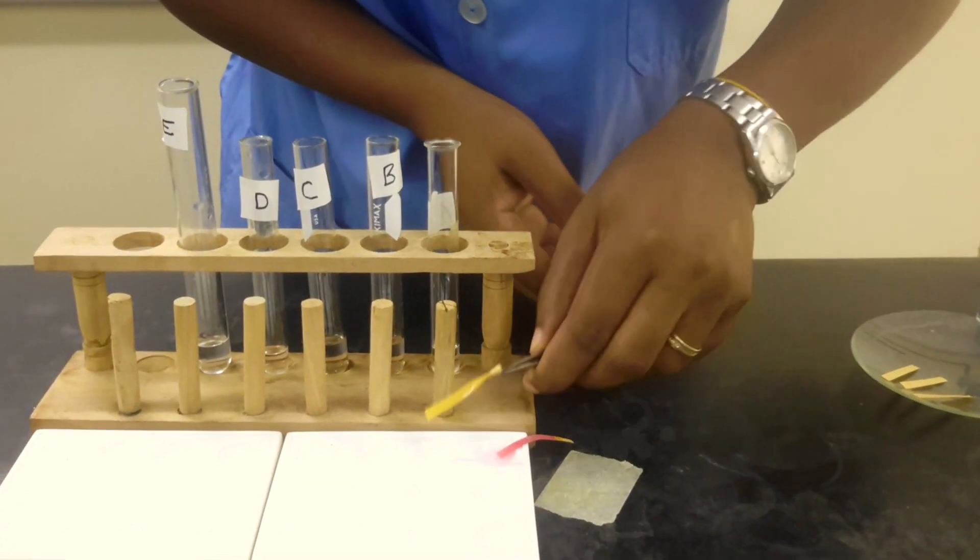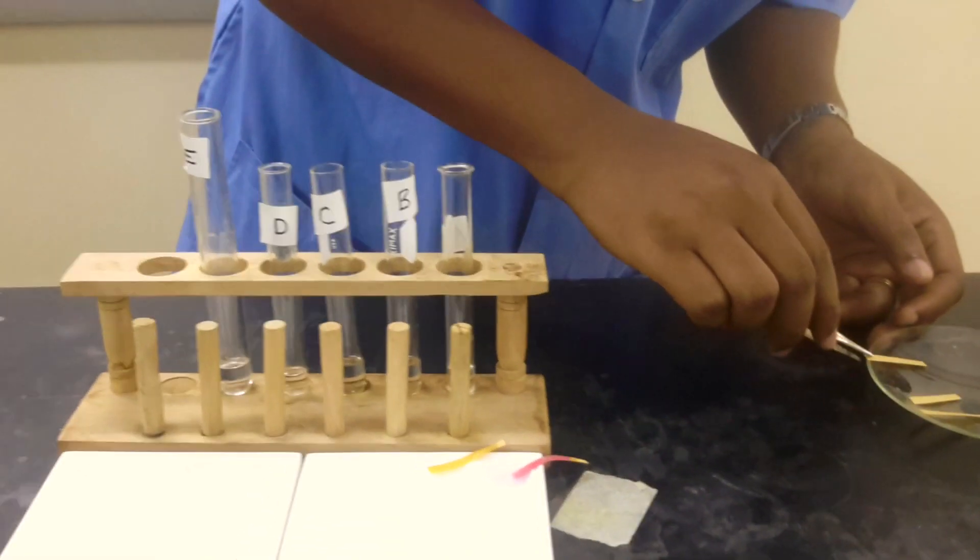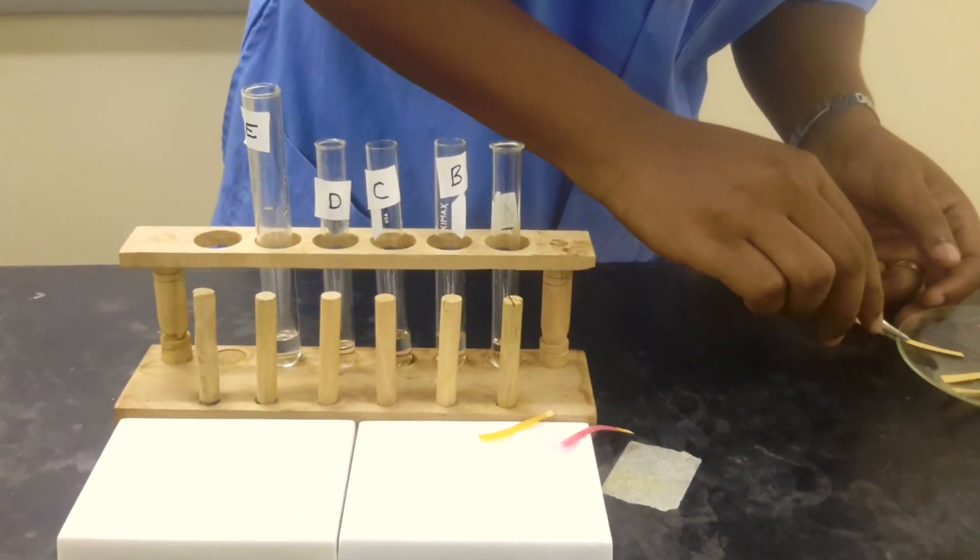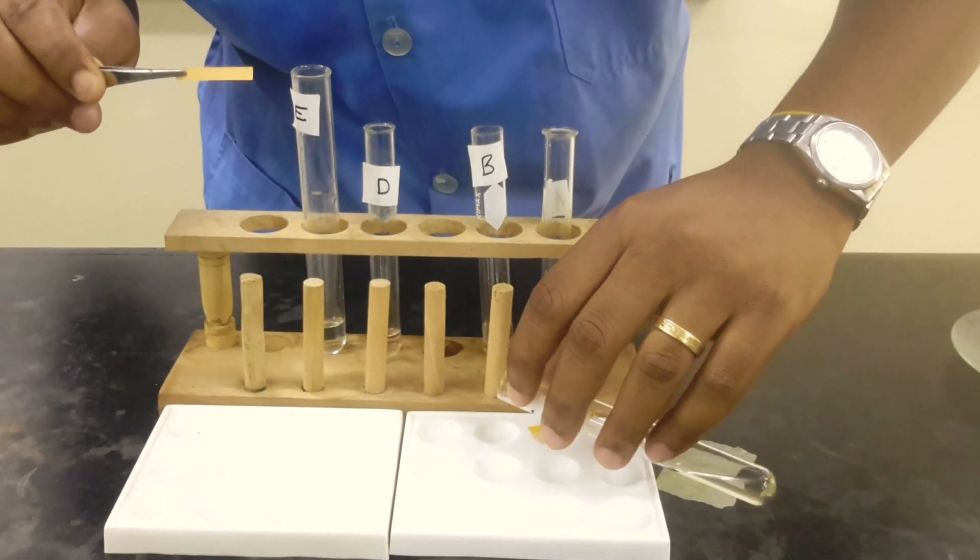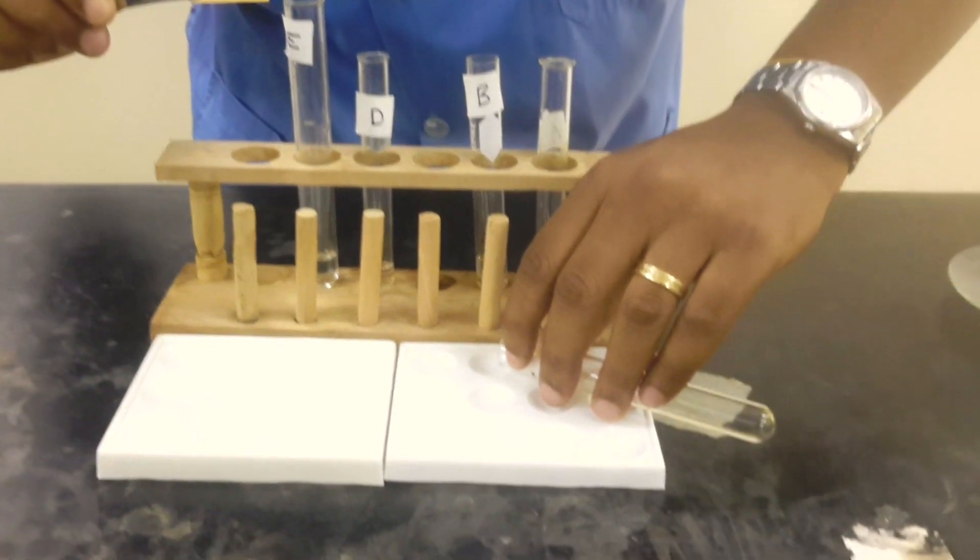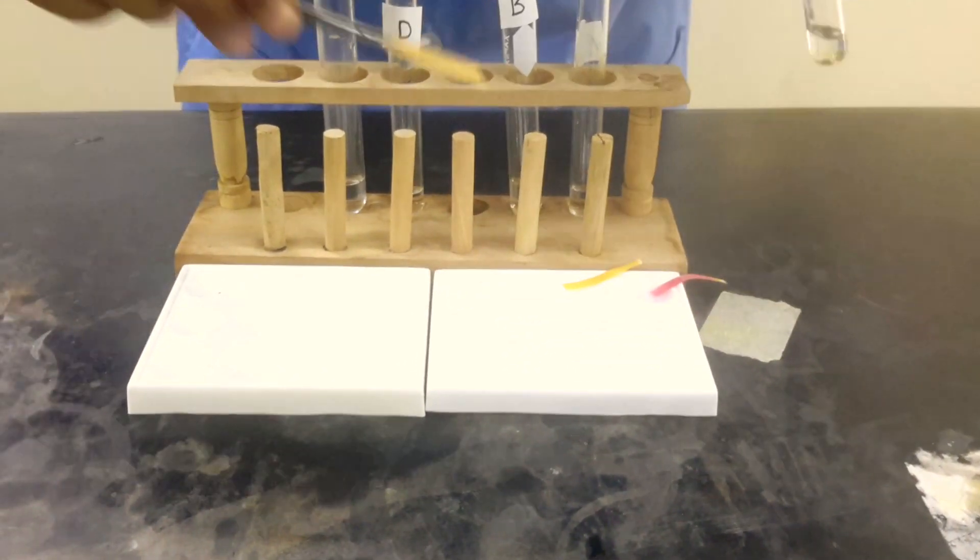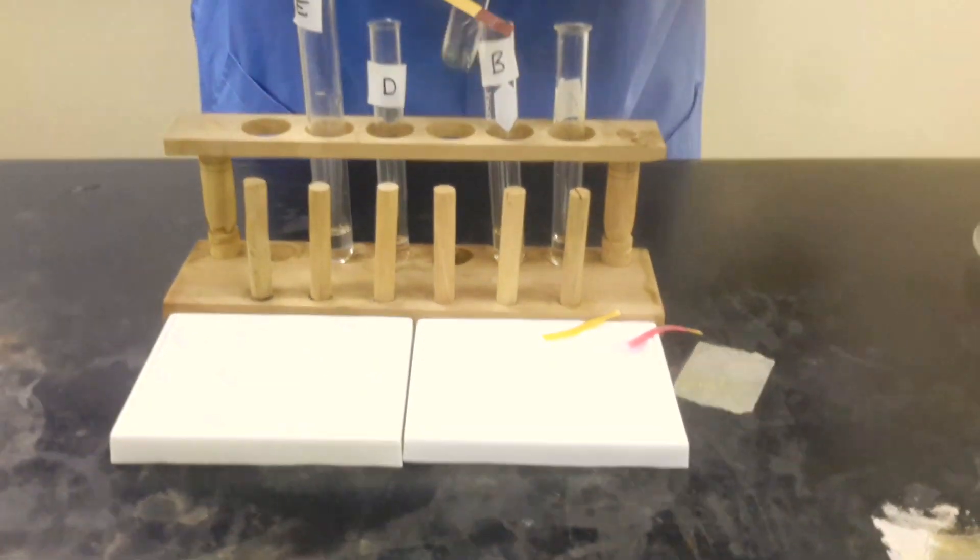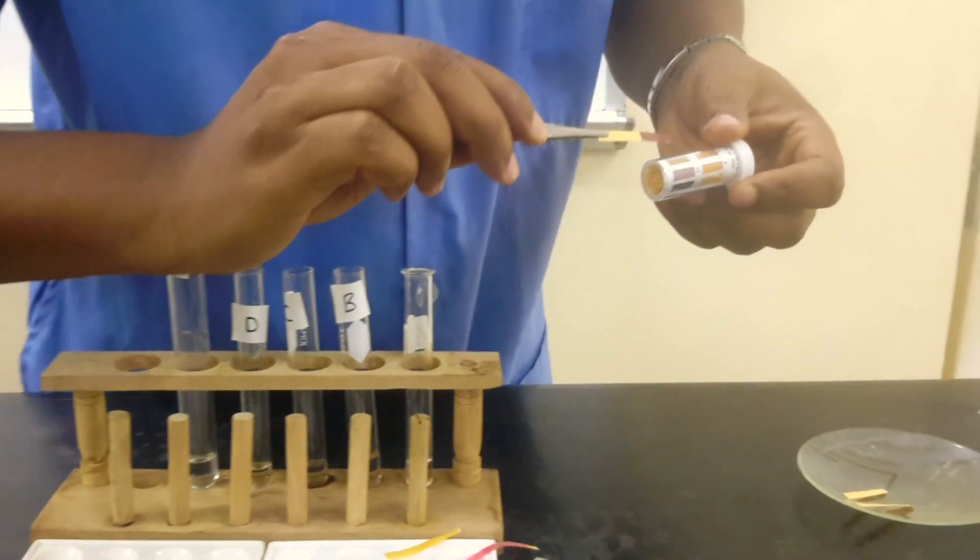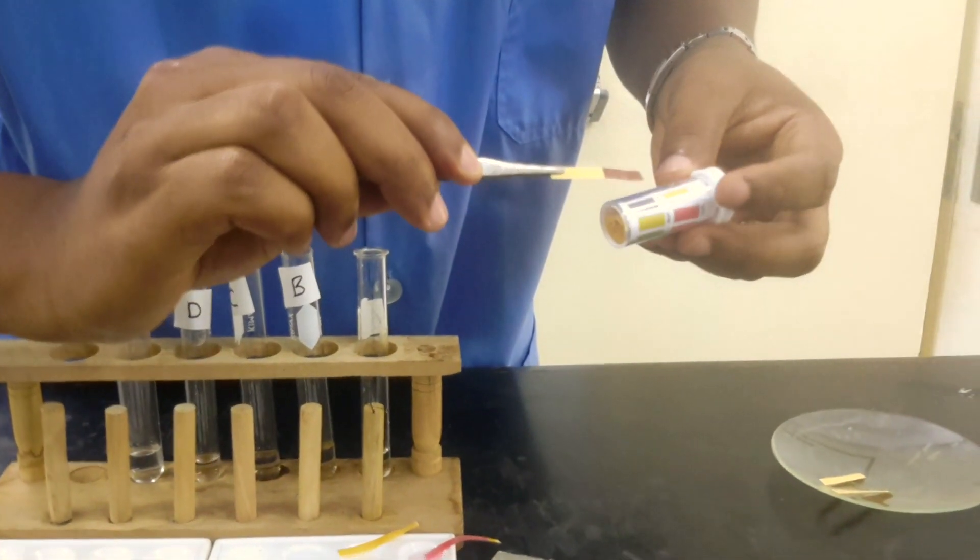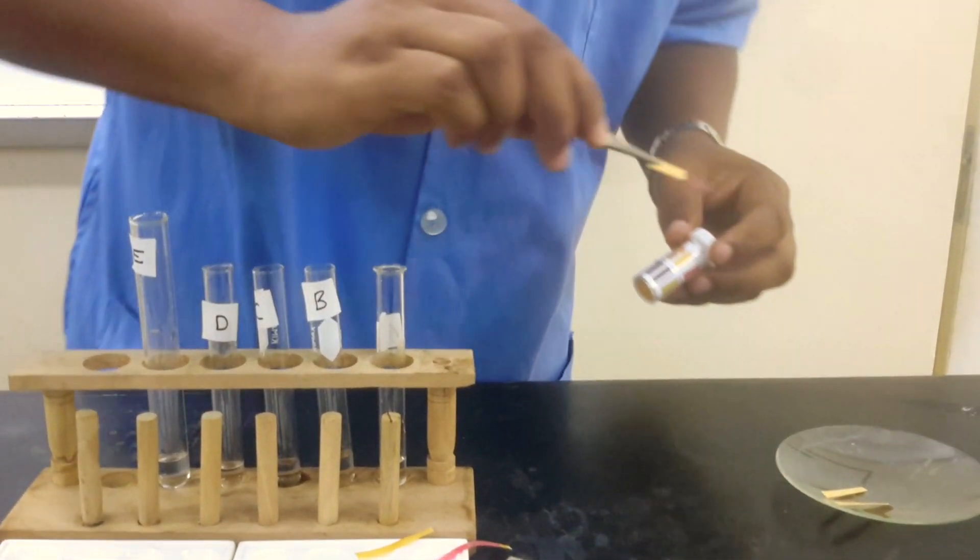We're going to do the same thing with C. Just to speed things up a bit, I could just pour a little of C into the spotting hole in the spotting tile, and I could just dip the strip into the solution, and then we'll do the usual match. This looks like pH 3.